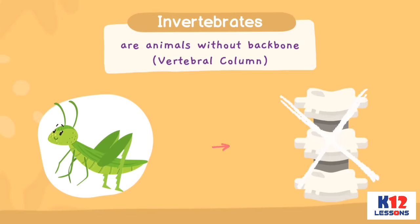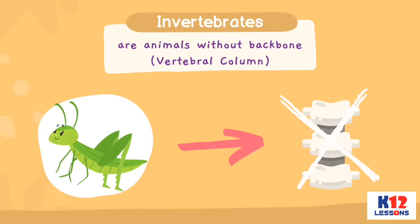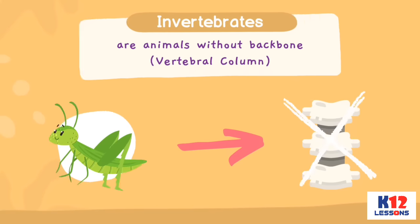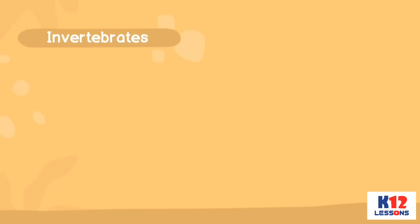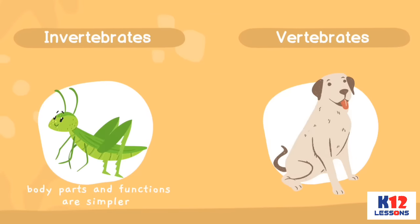Invertebrates are animals without a backbone or vertebral column. Invertebrates are simple animals because they don't have backbones. Their body parts and functions are simpler compared to those of the vertebrates.